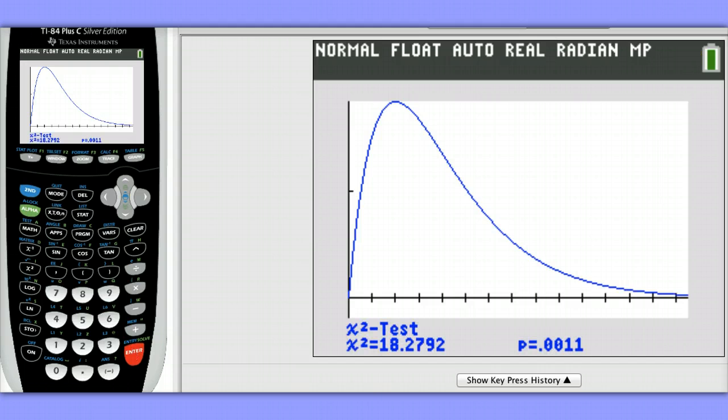We can see the chi-square distribution being drawn, and at the bottom of the screen we see the chi-square test statistic and the p-value. Because this p-value is so small, we don't really even see the shading in the end of the distribution here.